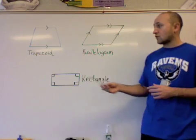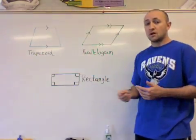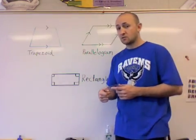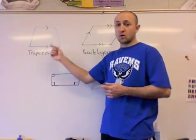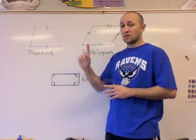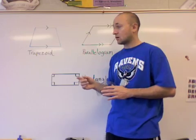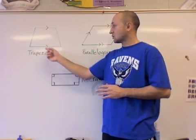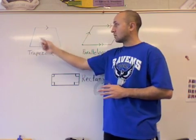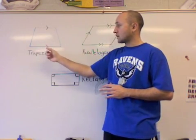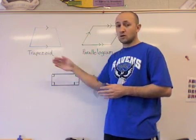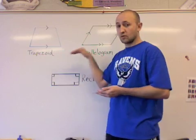We're going to first start off with what's called a trapezoid. A trapezoid can be identified because it has four sides, since it is a quadrilateral, but what really makes it stand out is that it has one set of parallel lines. Looking at our trapezoid, we can see that the bottom and the top line — designated by the arrows — are parallel lines. They run the same way.